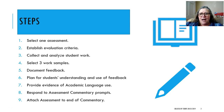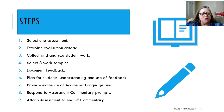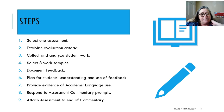There are nine steps that I've identified to completing Task 3. The first is to select an assessment. Then establish your evaluation criteria. Collect and analyze student work. Select three work samples. Document feedback. Plan for students' understanding and use of feedback. Provide evidence of academic language use. Respond to assessment commentary prompts. And attach the assessment to the end of the commentary. Let's take a look at each of these steps.